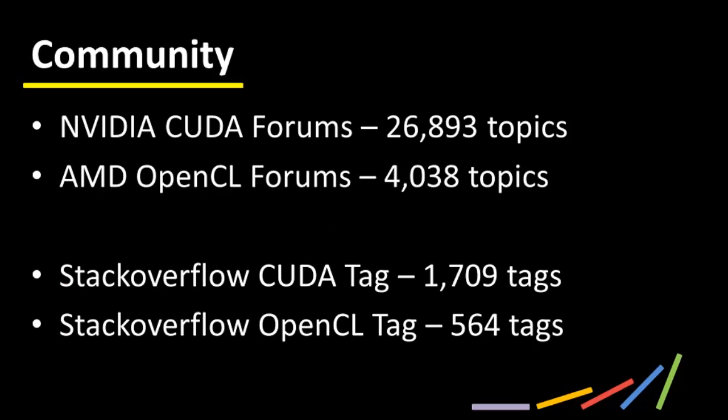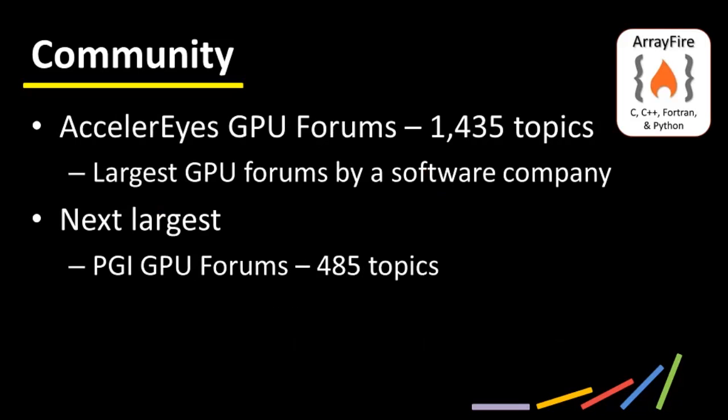At Accelerize, we have over 1,400 GPU topics on our forums, which is the largest community of GPU programmers supported by any software company. The next largest is the veteran HPC company PGI, with 485 topics on their GPU forums. Community also relates to the ecosystem and other tools, which we'll cover in a discussion of libraries.